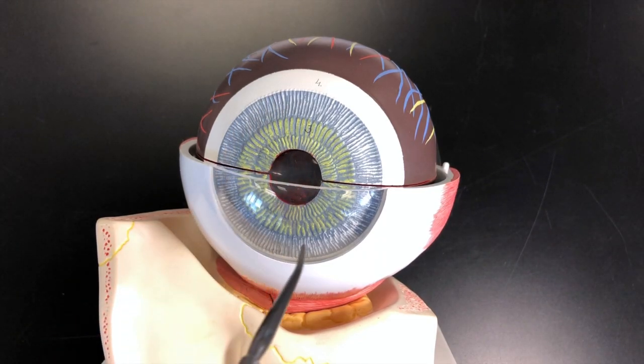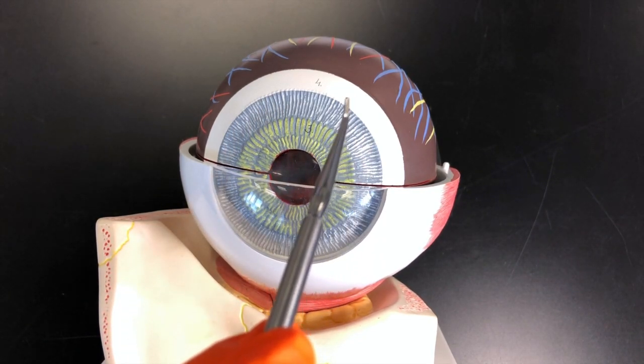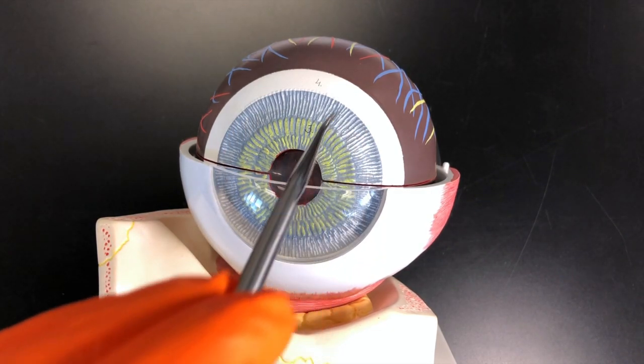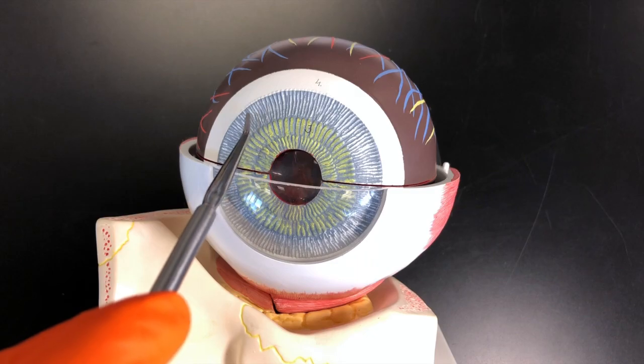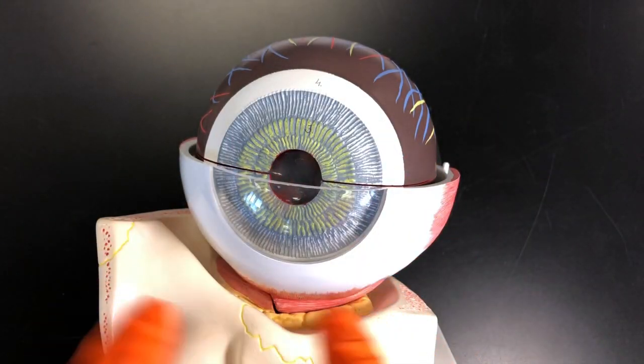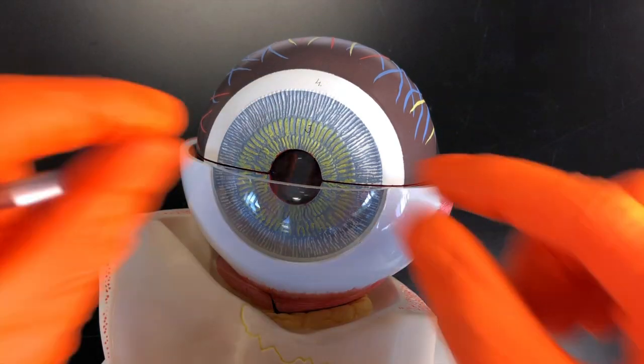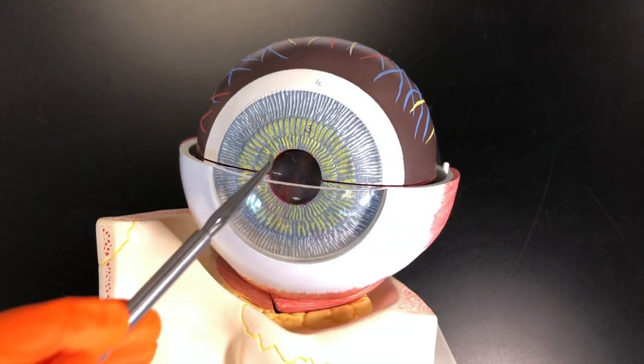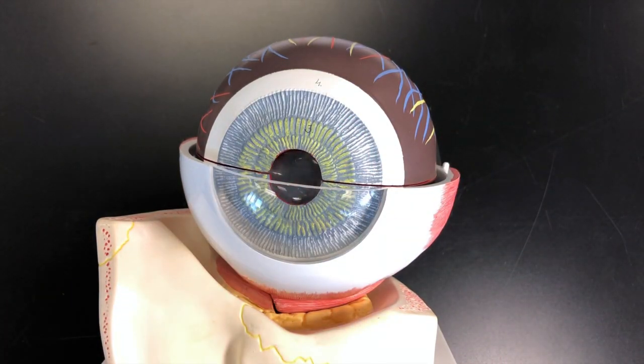Then on the outer portion right here, we have the dilator pupilli. Those fibers are kind of like spokes on a wheel. When those fibers contract, it will open the pupil or dilate the pupil.